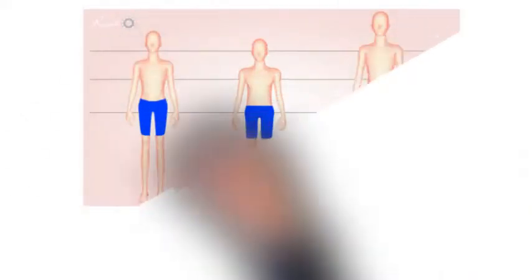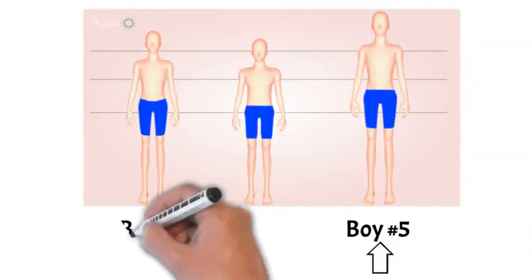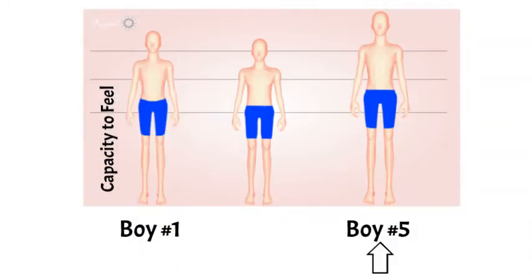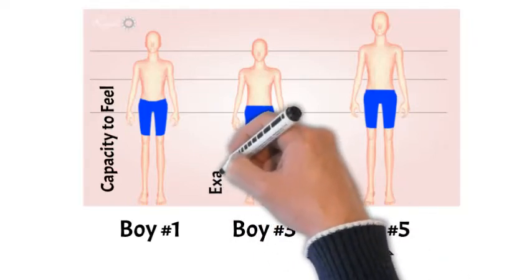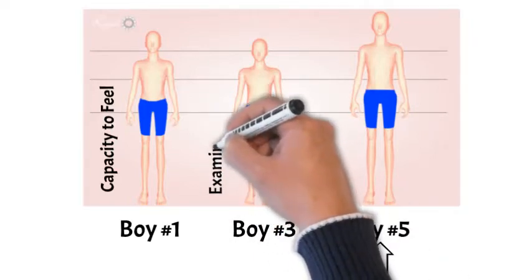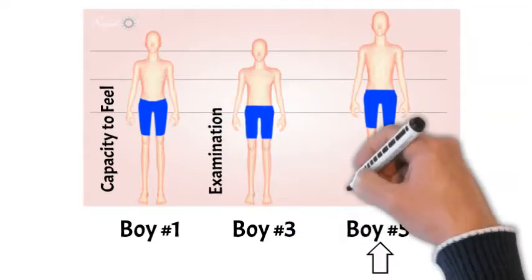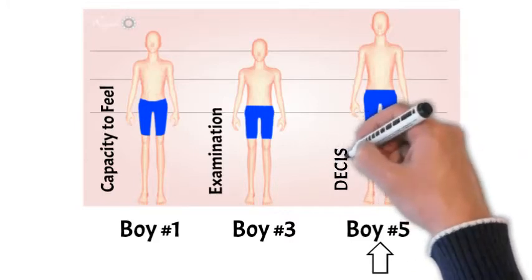Five boy works primarily as an extension of one boy's capacity to feel, three boy's capacity for the examination of options or possibility, and five boy's ability to be able to make a decision about which possibility and which feeling to experience.